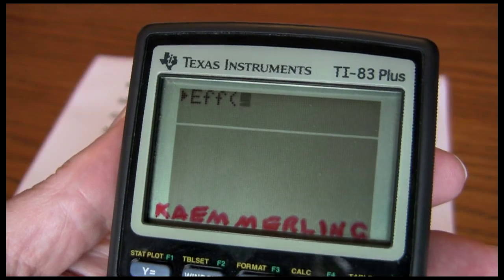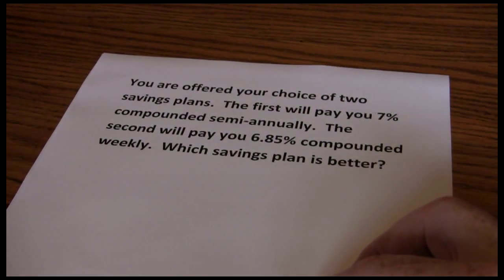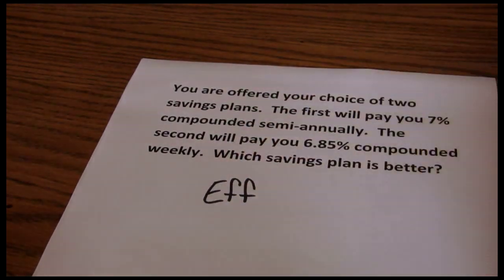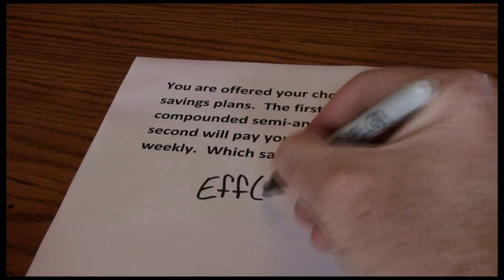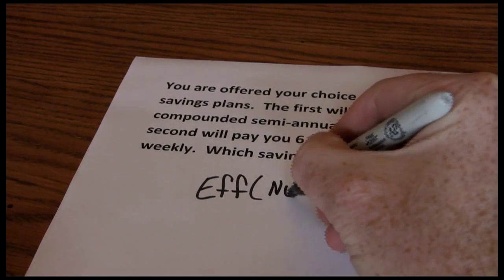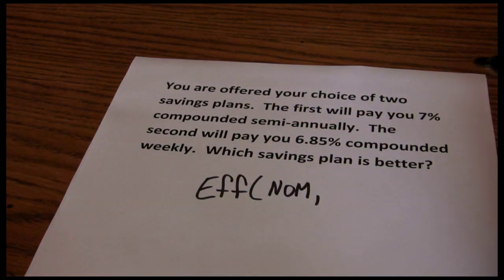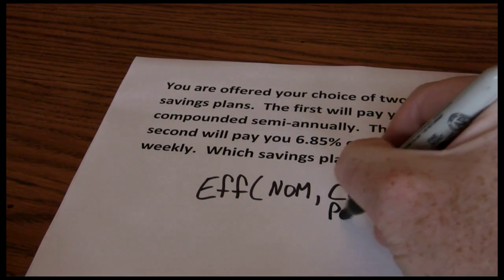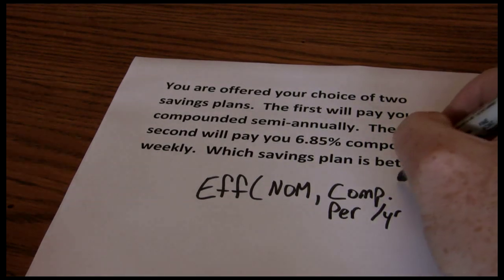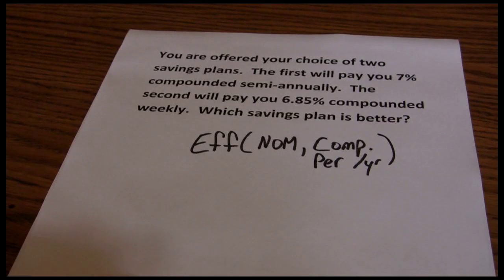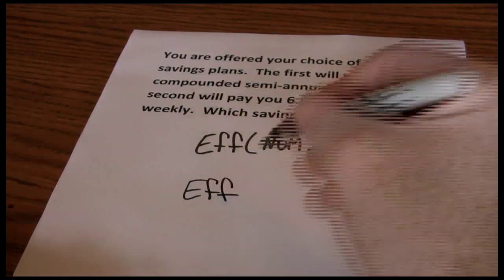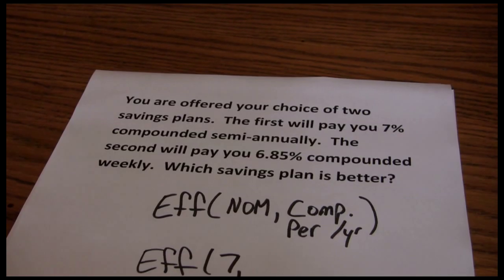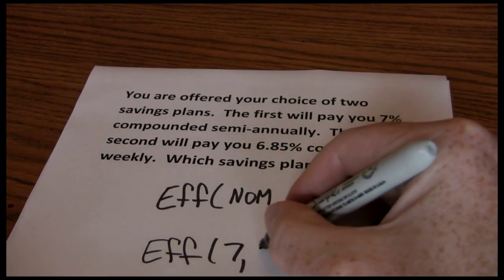Now all it shows you here is EFF and then gives you an open bracket. In order to solve for the effective interest rate using the TI-83 or TI-84, we want to put in our nominal rate and then the compounding periods per year. In our example here, our nominal rate for the first one is 7% and it's compounded semi-annually, which means 2 times per year.